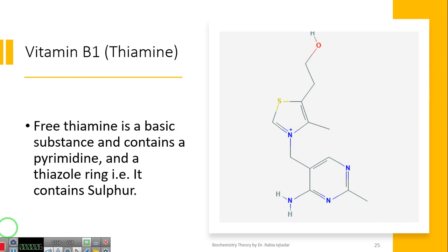The chemical characteristics of thiamine are it's a basic substance and contains a pyrimidine and a thiazole ring which means it contains sulfur. What is the pyrimidine ring? This ring here is pyrimidine ring. Pyrimidine ring is a 6-membered ring with 2 nitrogens and a thiazole ring. This one is thiazole ring. Thiazole ring is a 5-membered ring with 1 nitrogen and 1 sulfur. So these are the structural characteristics of thiamine.